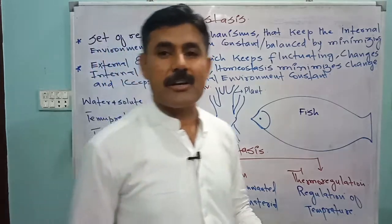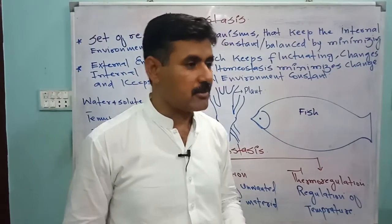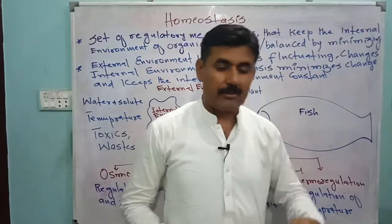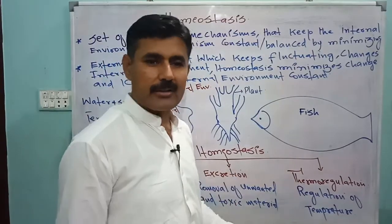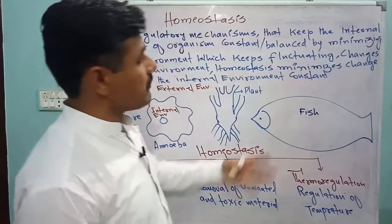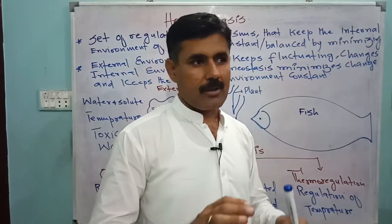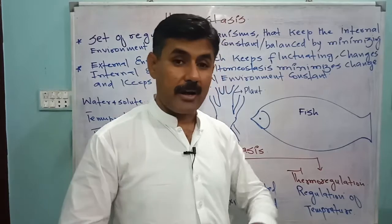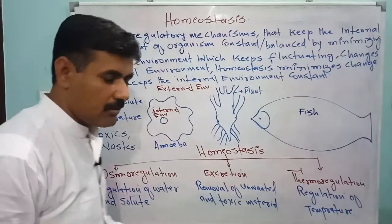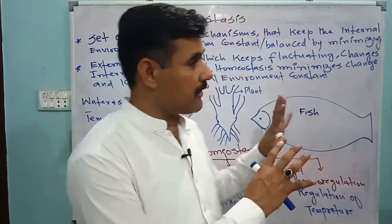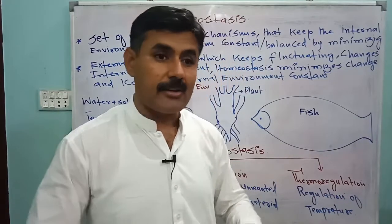The external environment always fluctuates — temperature fluctuates, there is variation of water. When the external environment keeps fluctuating, it changes the internal environment, and change in the internal environment is unfavorable for organisms. So organisms keep the internal environment constant by a set of mechanisms called homeostasis, which minimizes the change caused by fluctuations of the external environment.